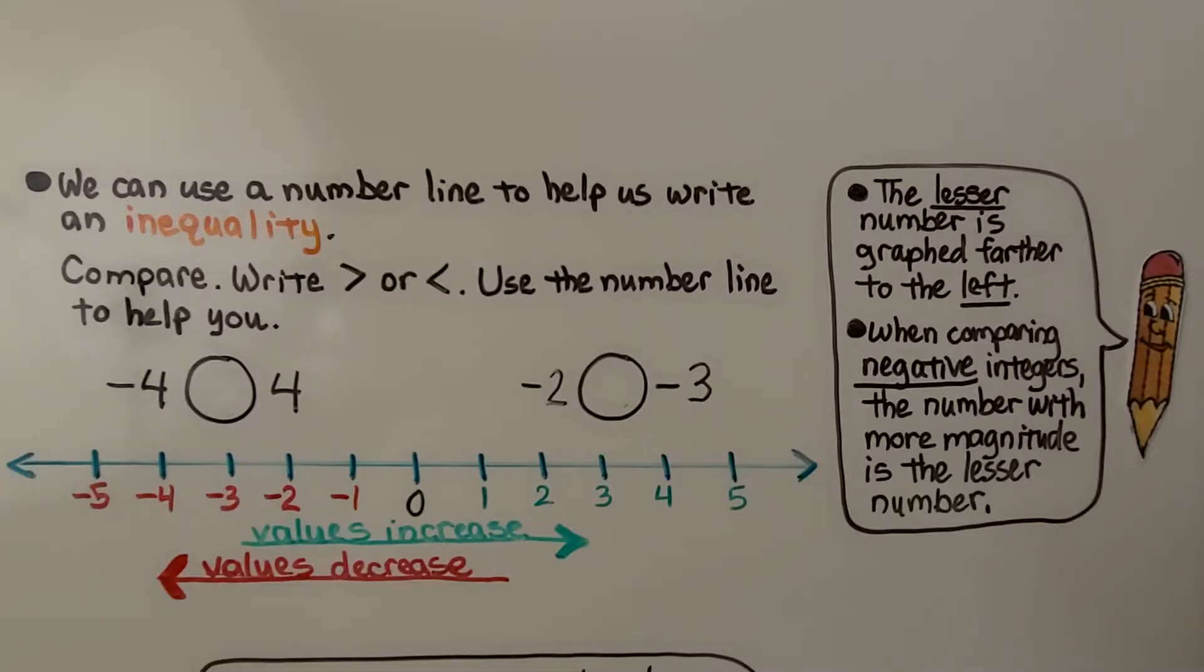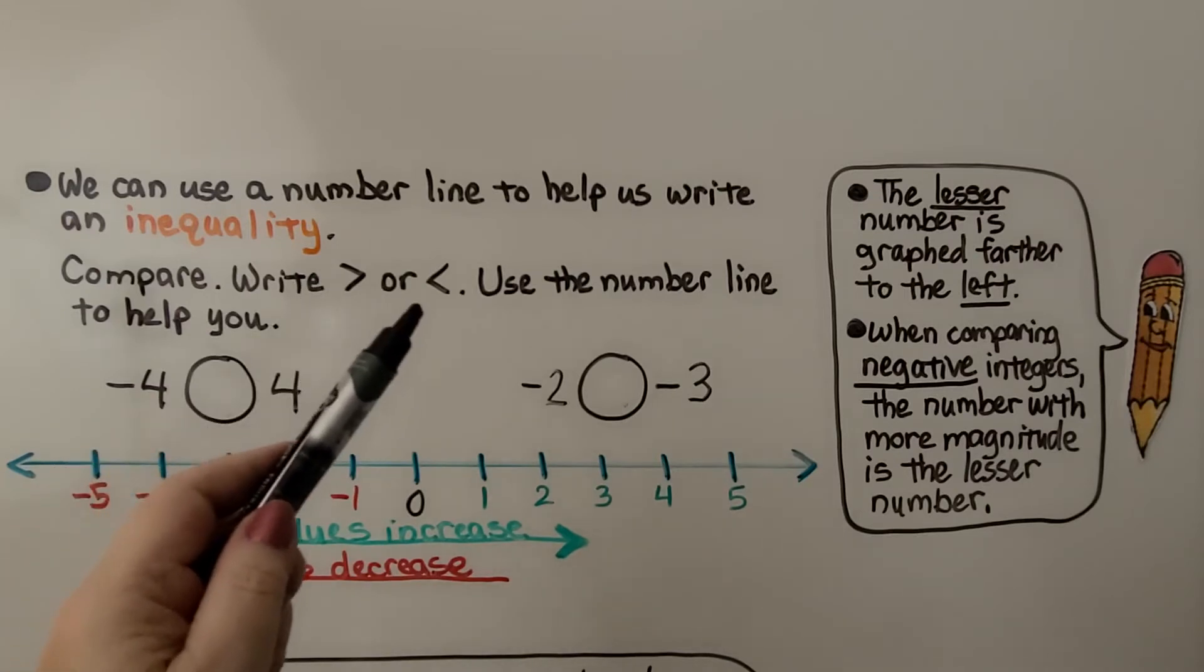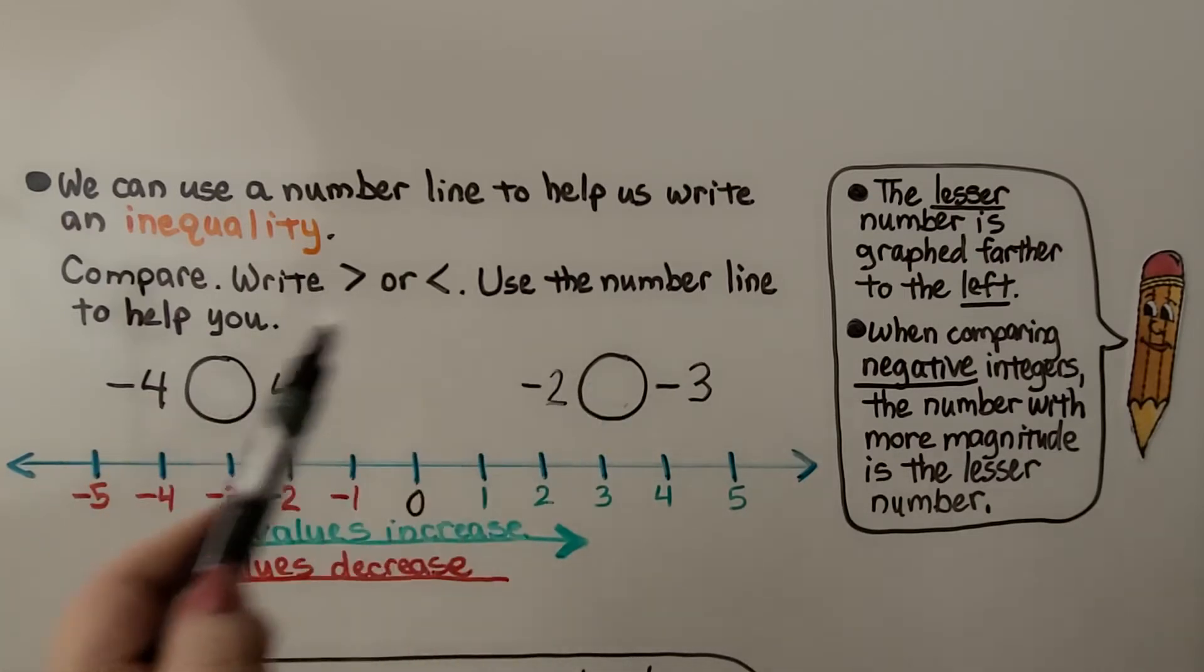We can use a number line to help us write an inequality. It's telling us to compare. So we need to compare the numbers and then write is greater than or is less than symbols in the circle. And we can use the number line to help us.